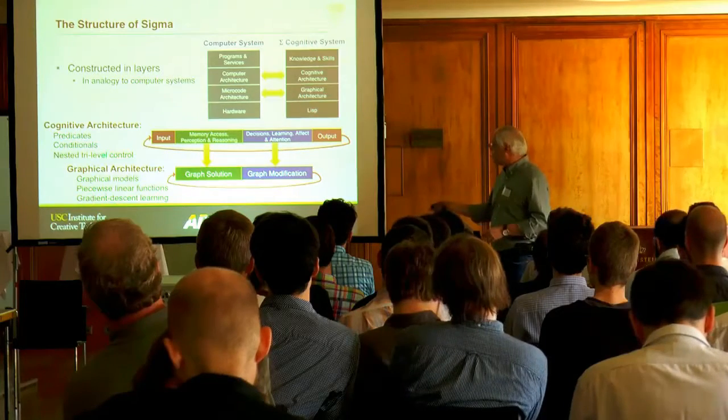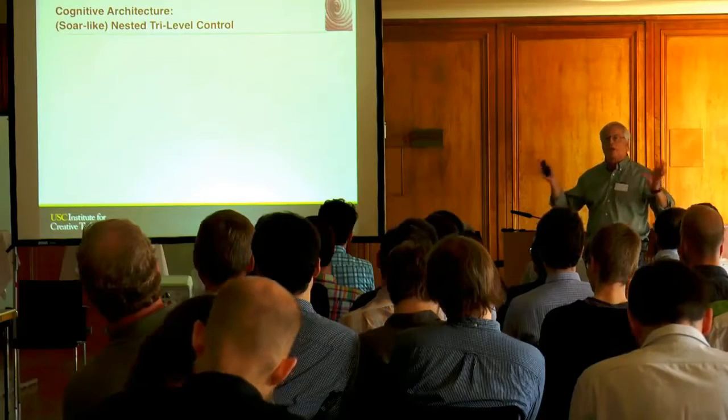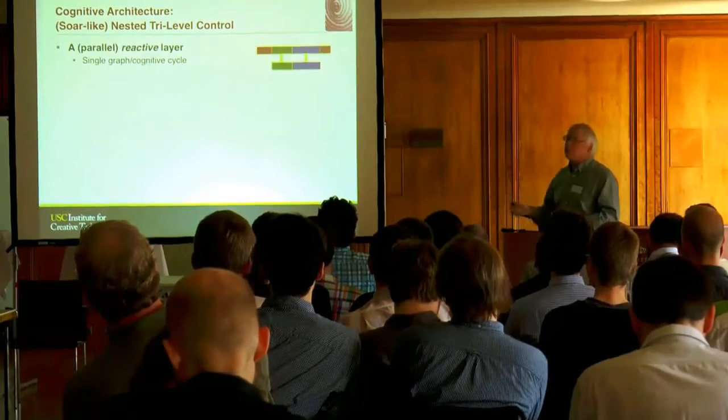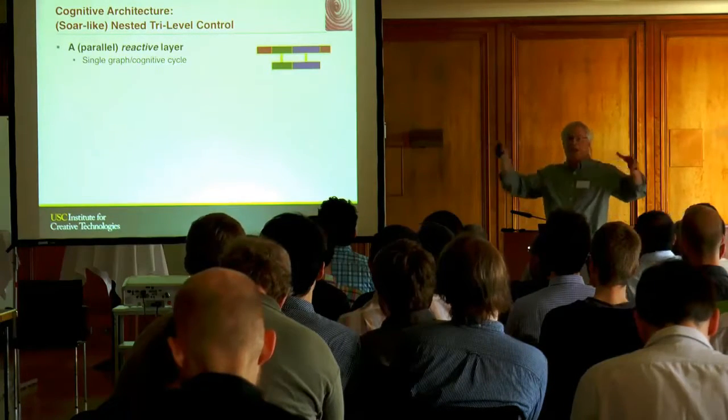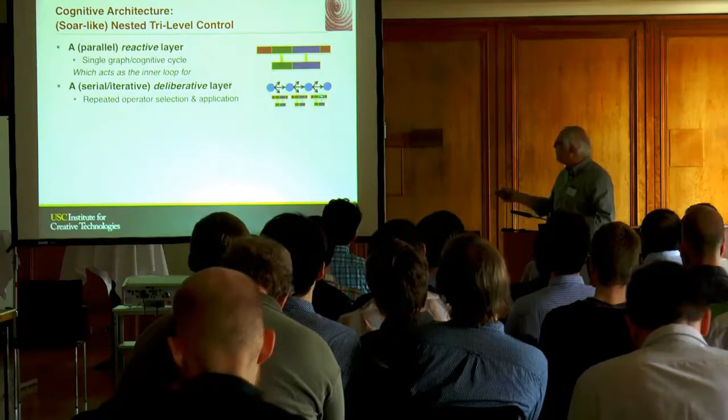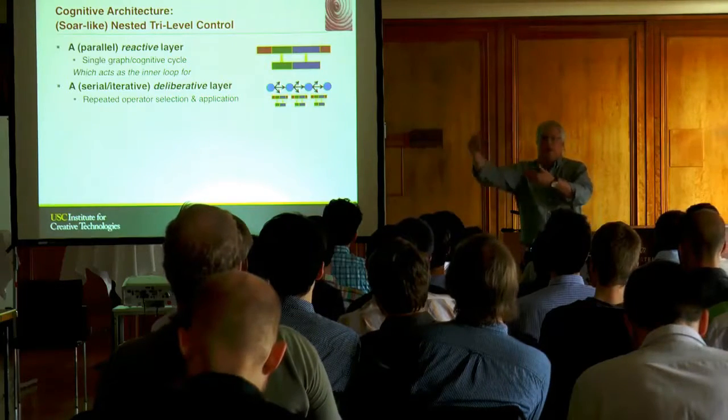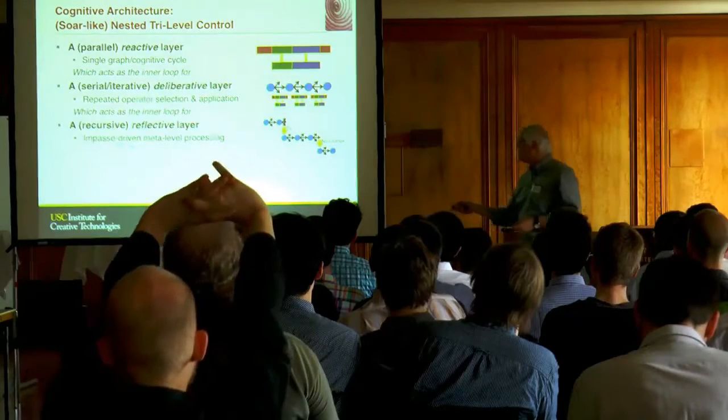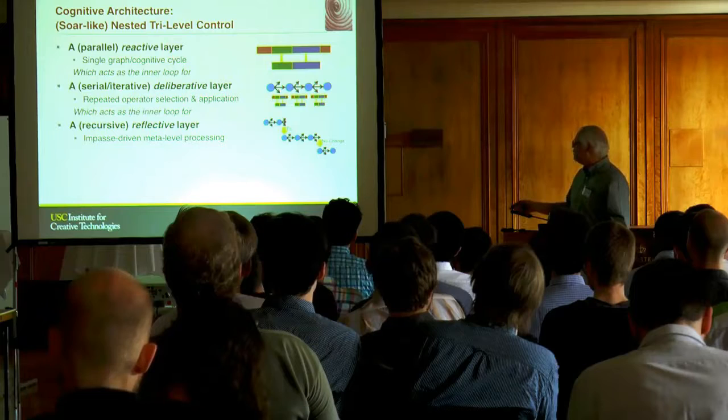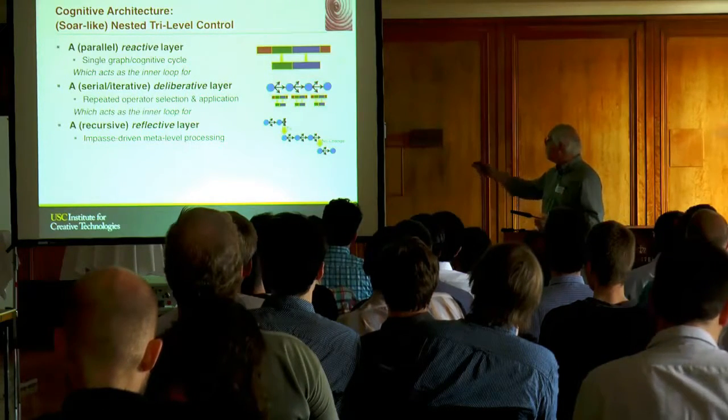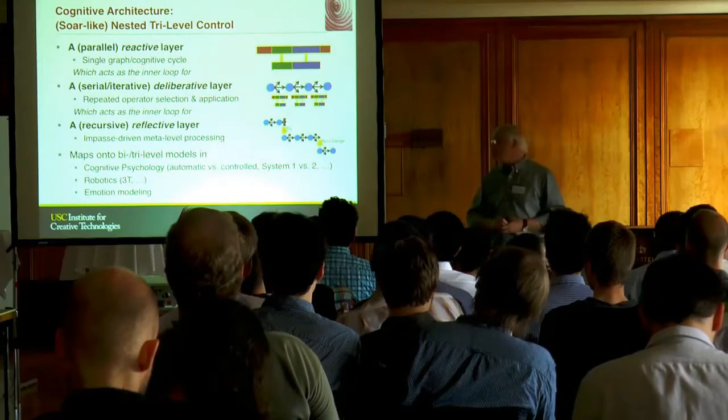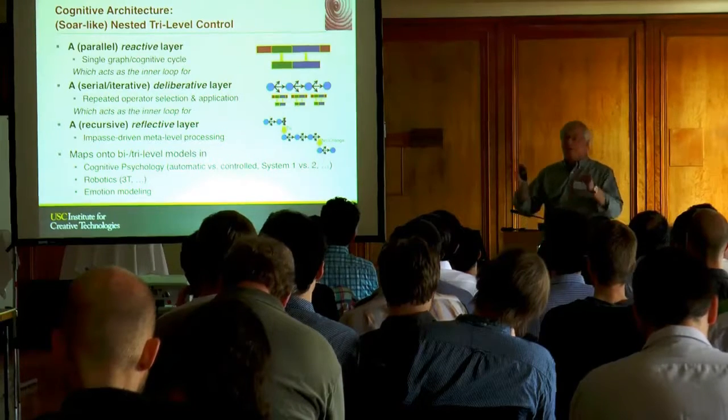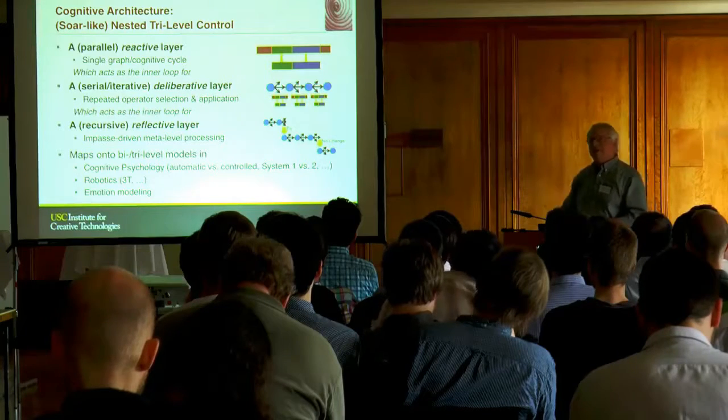In order to understand the work on emotion, I'm going to talk about this tri-level nested control structure, taken from SOAR. The inner loop is a parallel reactive layer, essentially a single graph cognitive cycle. That's not a separate module, it's the inner loop of a serial or iterative deliberative layer where you repeatedly select and apply operators. This is how you get sequential behavior with each step involving reactivity. That acts as the inner loop for a recursive reflective layer which does impasse-driven meta-level processing. This roughly maps onto a number of distinctions in cognitive psychology, robotics, and emotion modeling.